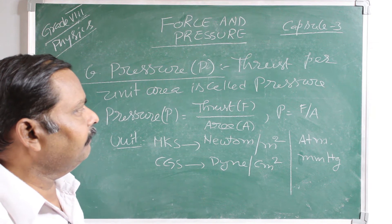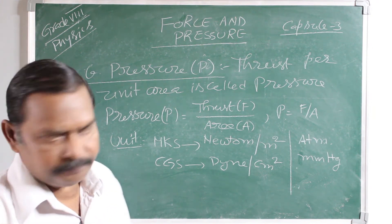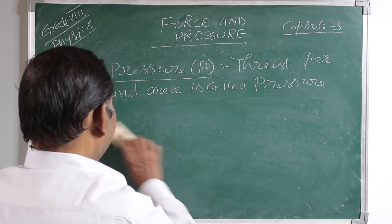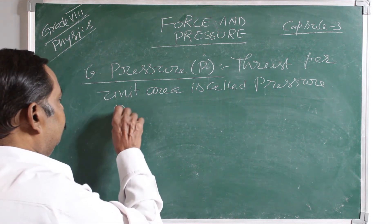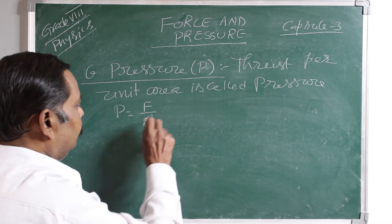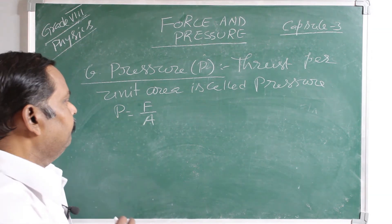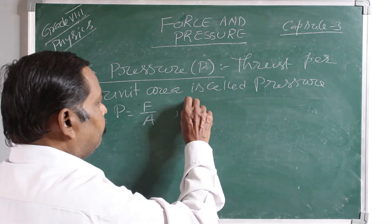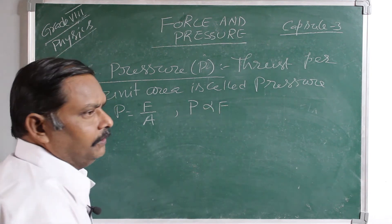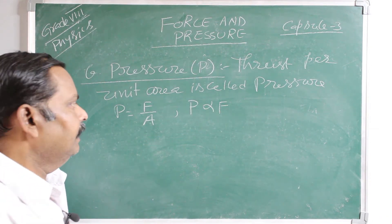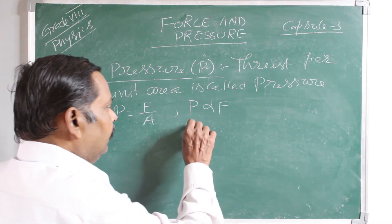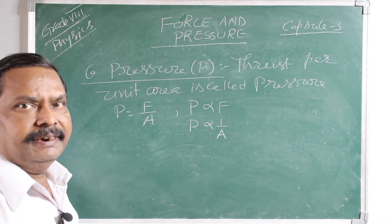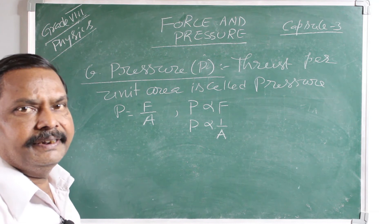Let us see what are the factors affecting the pressure acting on a surface. Pressure is equal to force by area. Force is in the numerator and area is in the denominator. Pressure is directly proportional to force — the more the force applied, the greater is the pressure. And pressure is inversely proportional to area of contact — the more the area of contact, the lesser is the pressure; the less the area of contact, the greater is the pressure.